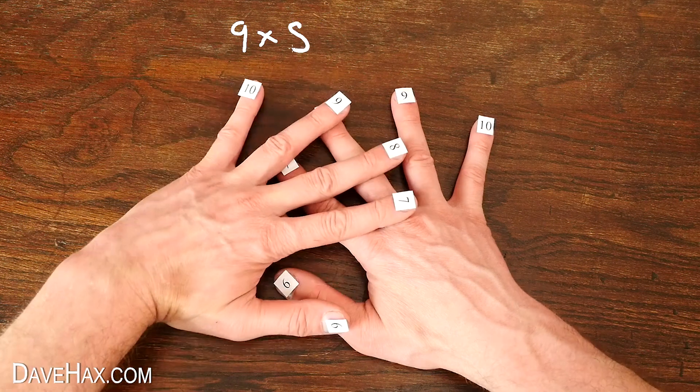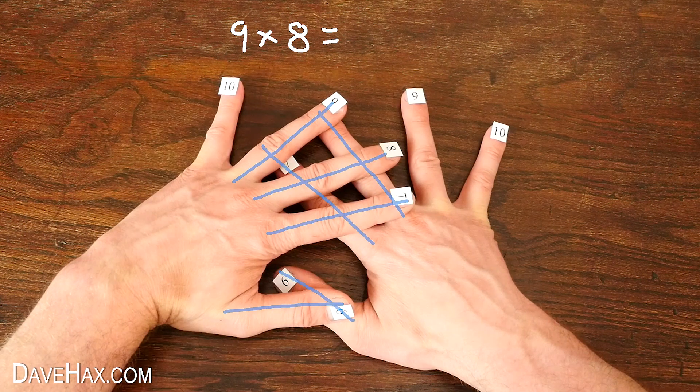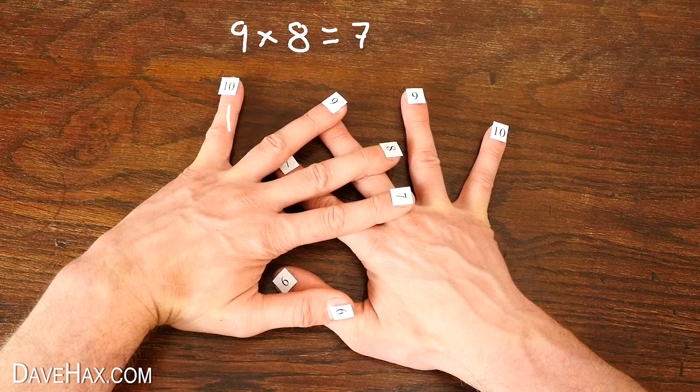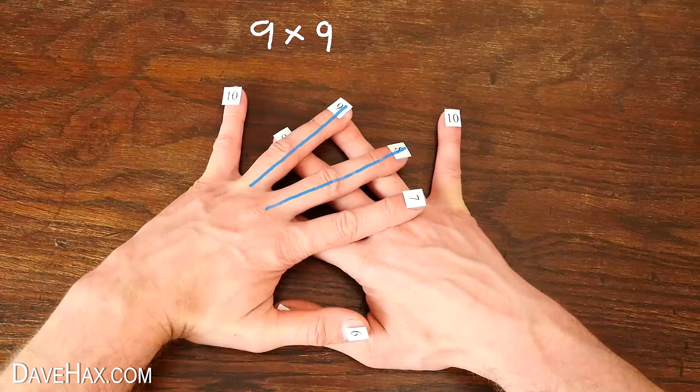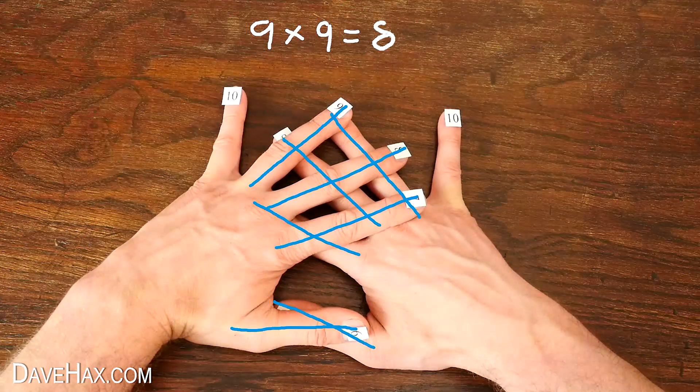And 9 times 8 would be 7 and 2. 72. 9 times 9 equals 81.